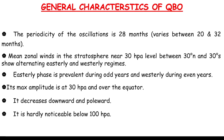According to some research papers, QBO has a relationship with stratospheric warming and affects the Arctic and Antarctic polar vortices. It also has an effect on the North Atlantic Oscillation, which will be covered in a separate video. This amount of information about QBO is quite enough for your CSIR exams. Stay tuned and stay curious.